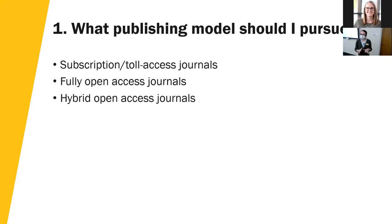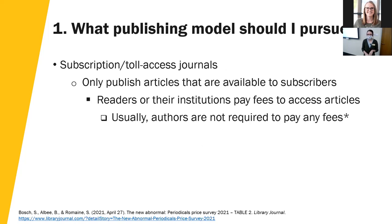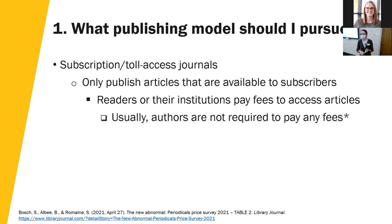Let's talk about the different publishing models — we're going to cover three today: subscription or toll access journals, fully open access journals, and hybrid open access journals. Subscription or toll access journals are those we tend to engage with most when doing research. These journals only publish articles available to subscribers. Individual readers or their institutions, like the University of Idaho, pay fees to access articles. Usually authors are not required to pay any fees to publish in these journals, though sometimes journals charge page fees or fees to print graphs or charts in color.